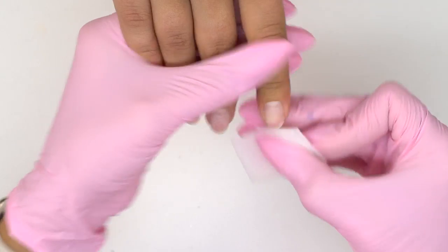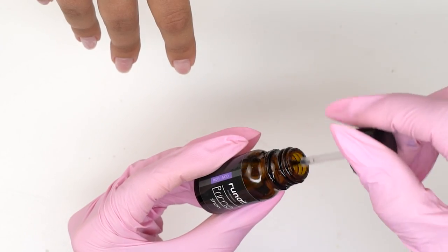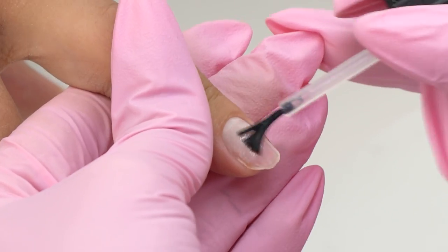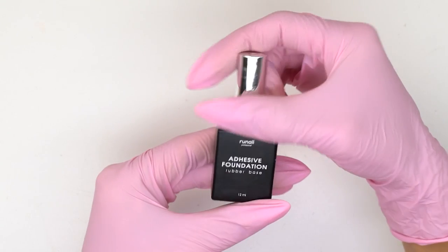To prepare the nails for sculpting, I apply a primer for better bonding. My model's nail plate used to be over-filed. So, there are still red areas on the surface.